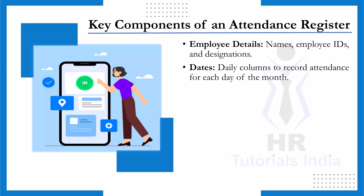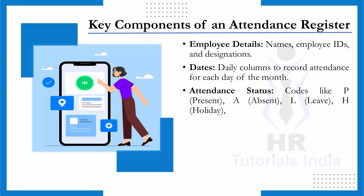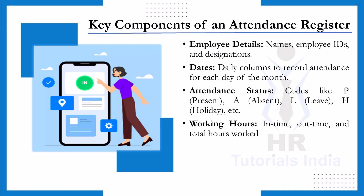Dates: Include columns for each day of the month. This allows you to record attendance daily and gives you a clear month-wise overview of employees' presence and absence. Attendance Status: Use simple codes like P for present, A for absent, L for leave, and H for holiday. These codes make it easy to understand the status at a glance and keep the register concise. Working hours: Track the in-time, out-time, and total hours worked each day, which is especially useful for calculating overtime.